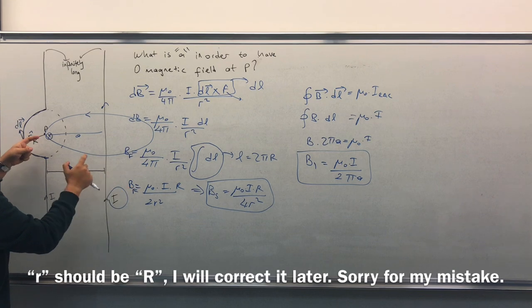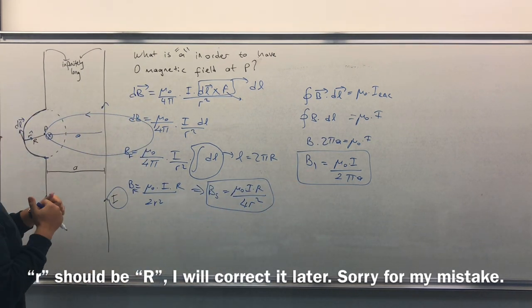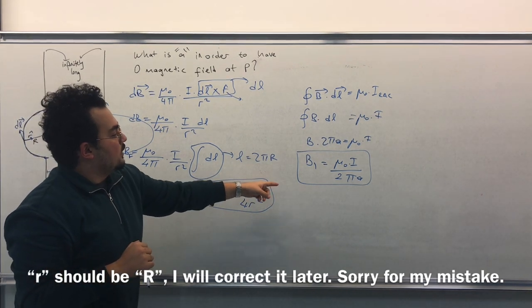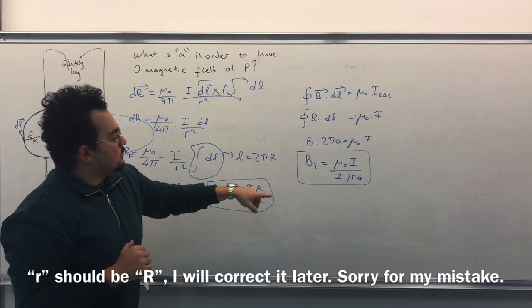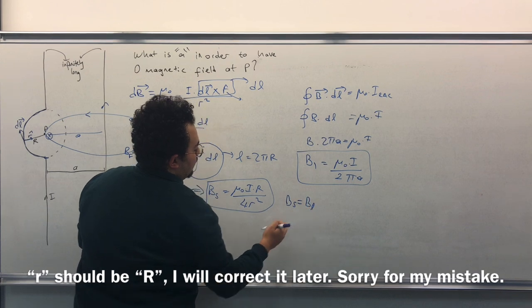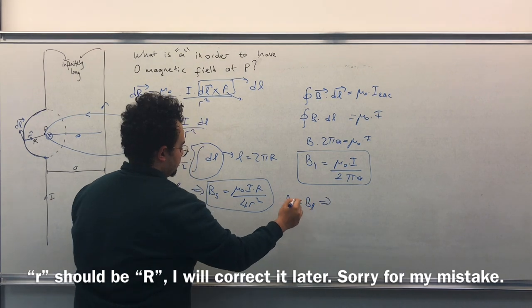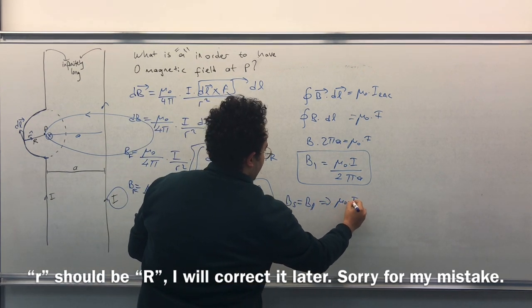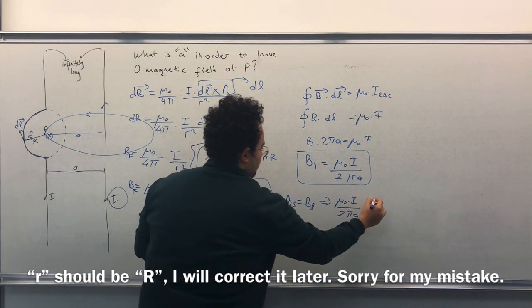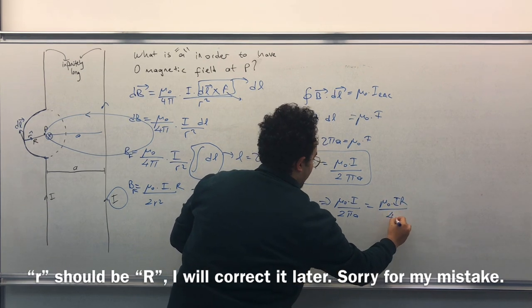So this magnetic field and this magnetic field are in the opposite direction. So what we need to do is just say B semicircle equals to B line, so that we will have zero magnetic field here. Then mu zero times I over 2 pi A equals to mu zero times pi I R divided by 4r squared.